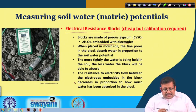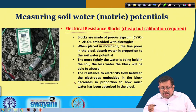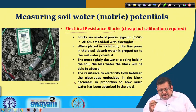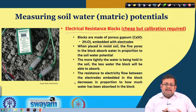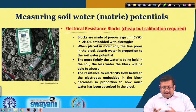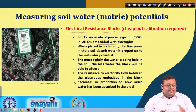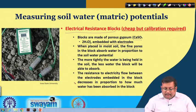As a result, the resistance to electricity flow between the embedded electrodes in the block decreases because of changes in the water absorption. These changes in electrical flow are measured by the electrical resistance block — this is how it works.